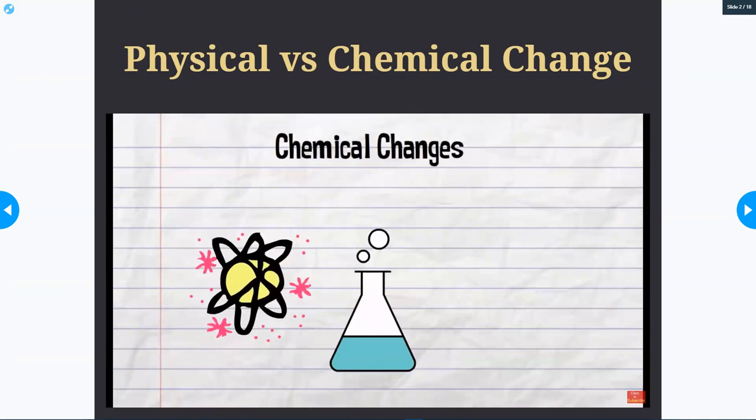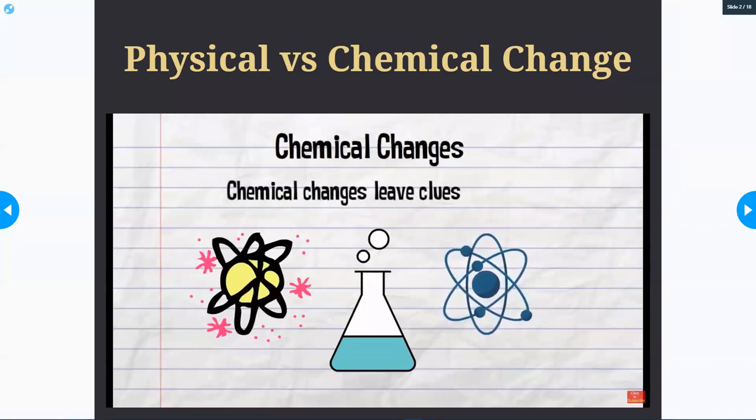Chemical changes, on the other hand, create a new substance. It involves breaking or making chemical bonds between atoms. Chemical changes leave behind clues or indicators. Here are five indicators of a chemical change.